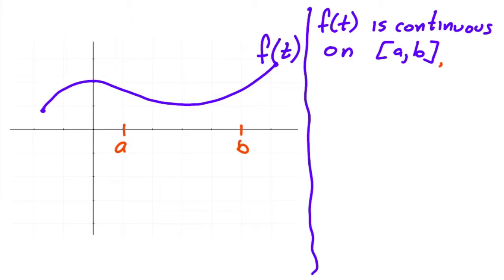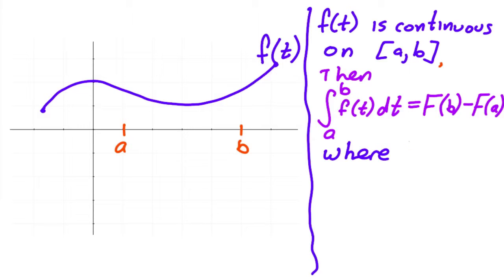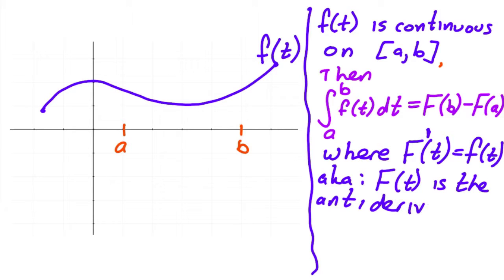So if f(t) is continuous on the interval from a to b, then the integral from a to b of f(t) dt—now I'm writing t just because we're going to interpret it as time, but it could be any variable—is equal to capital F(b) minus capital F(a), where capital F prime of t equals f(t). So in other words, a.k.a., capital F(t) is the antiderivative of f(t).